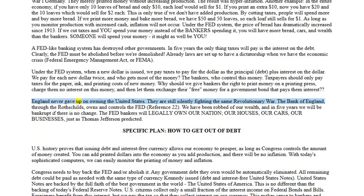England never gave up on owning the United States — they are still silently fighting the same Revolutionary War. The Bank of England, through the Rothschilds, owns and controls the Fed. We have been robbed of our wealth, and in five years we will be bankrupt if there is no change. The Fed bankers will legally own our nation, our houses, our cars, our businesses — just as Thomas Jefferson predicted.